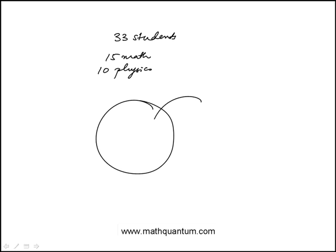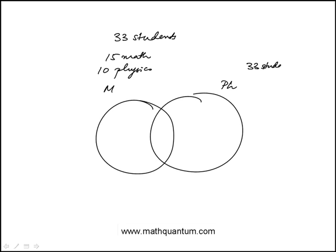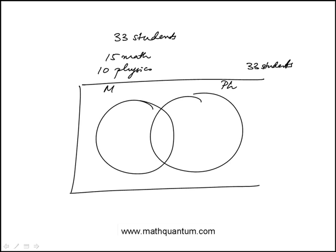So this is a Venn diagram problem, anytime you see an overlap. So math, physics, total is 33 students, and there may be some that are enrolled in neither. So that total is 33.